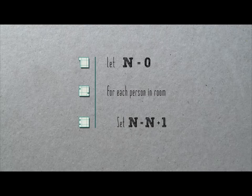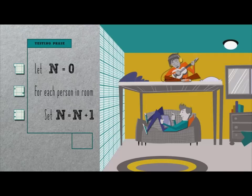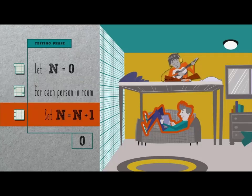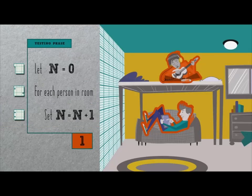Is this algorithm correct? Let's test it. Does it work if there are two people in the room? In line one, we initialize n to zero. For each of these two people, we increment n by one. On the first trip through the loop, we update n from zero to one. On the second trip, we update n from one to two. By this algorithm's end, n is two, which indeed matches the number of people in the room.